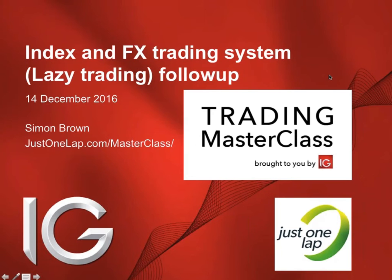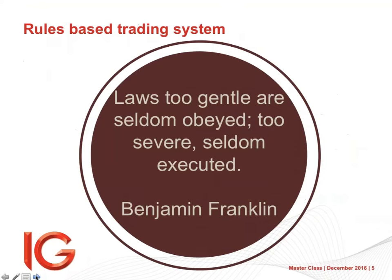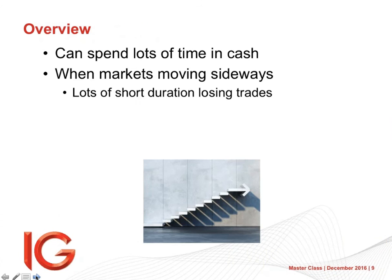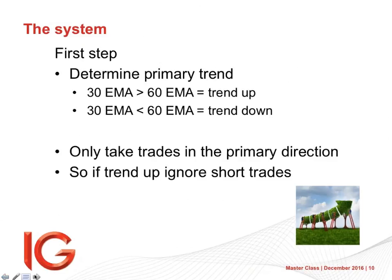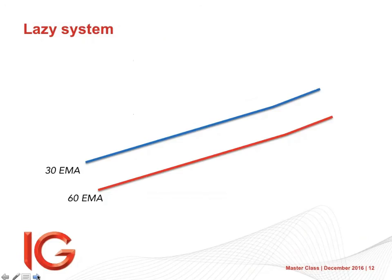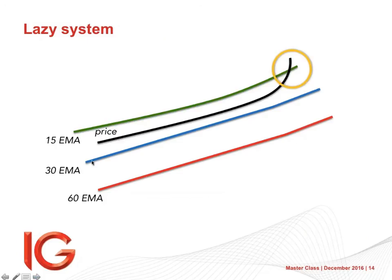Today we're looking at a follow-up from the FX and index lazy trading system. To quickly remind you of how it works: it is a very simple system. We use the 15, 30, and 60 exponential moving averages — 30 and 60 for direction, 15 for trigger. When the 30 is above the 60 and price goes up through the 15, the next candle closing up is your confirmation candle.